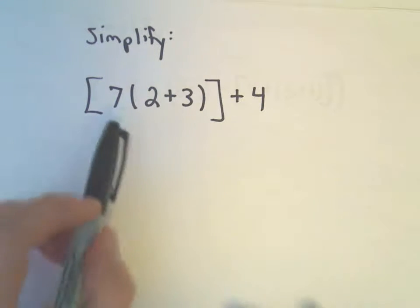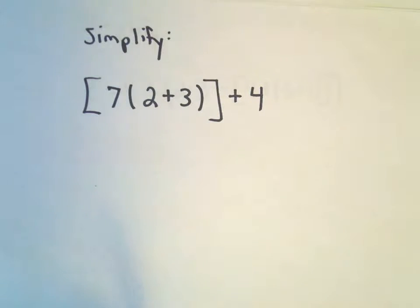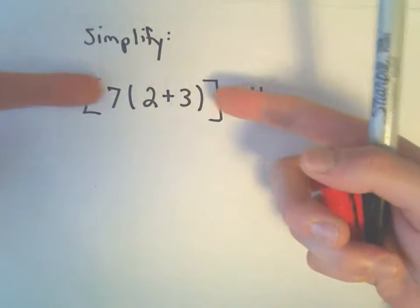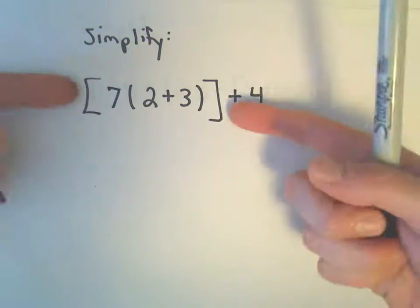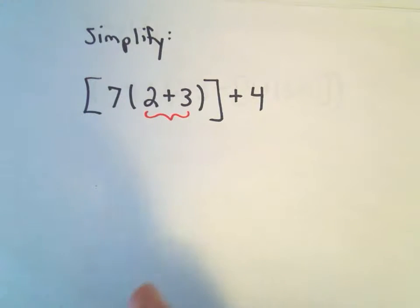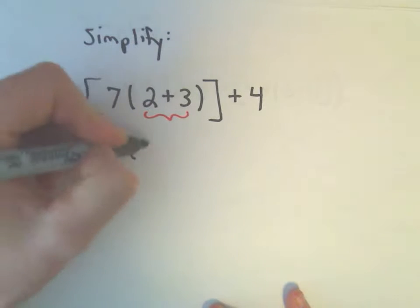All right, so now we've got 7 times the quantity 2 plus 3 plus 4. The first thing it's said to do is look inside parentheses and brackets. So I see a bracket here, and then I see parentheses. So I'm going to keep moving inside. I'm going to do 2 plus 3 first. Well, 2 plus 3 is just going to be 5.